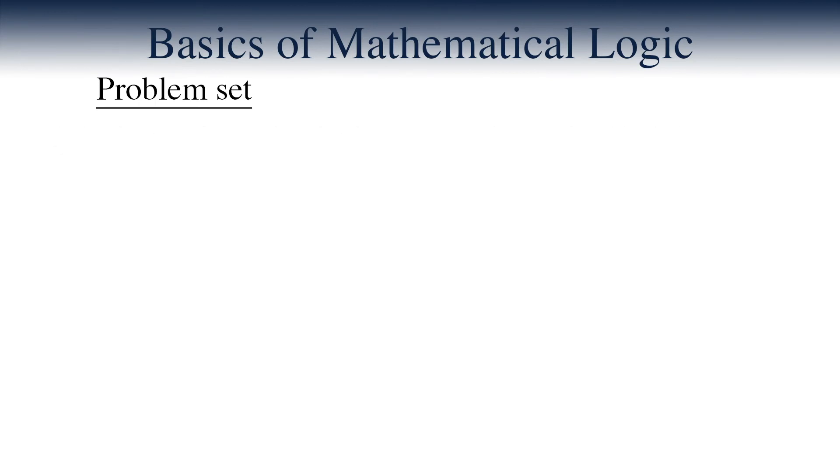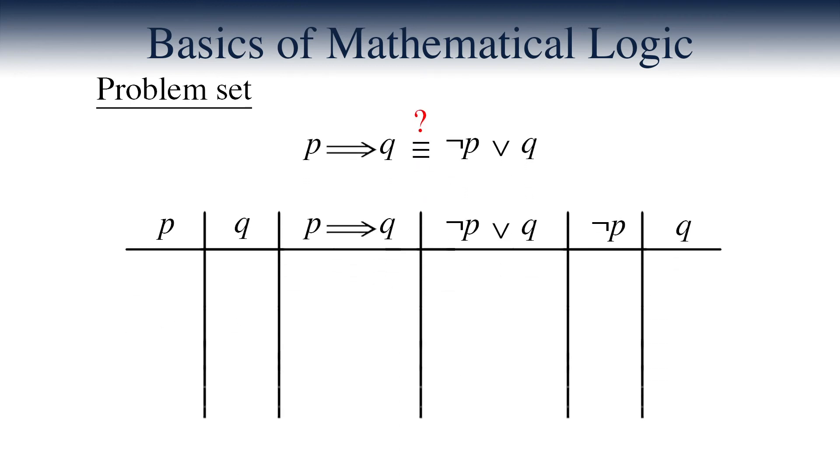Let's discuss the second problem. In this problem, we must prove if a statement, P implies Q, is equivalent to the statement, negation of P or Q. As we've seen a similar problem before, we need to write down the truth tables for both statements and check if they match. So we draw a combined truth table for both.